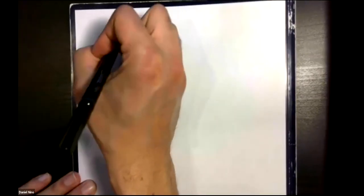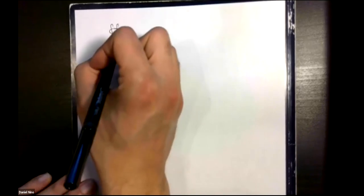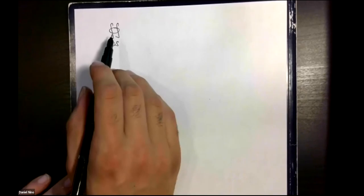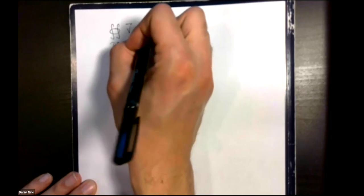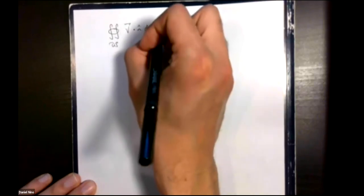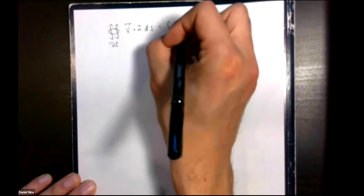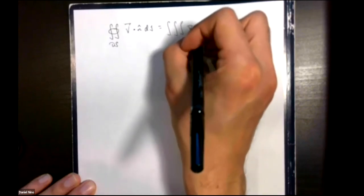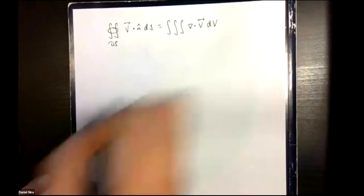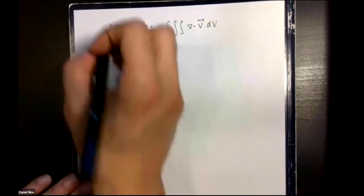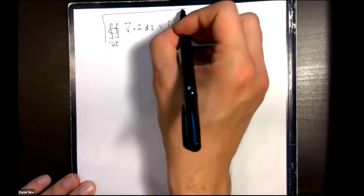What we're left with then is the surface integral over the surface enclosing a volume, v dot n ds, is equivalent to calculating the volume integral of the divergence of the vector field over that volume. And this result